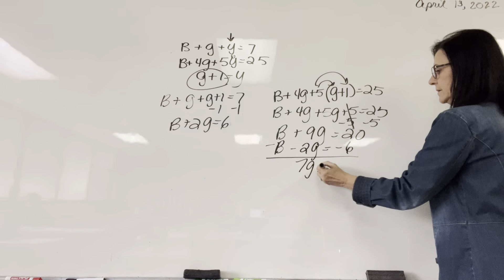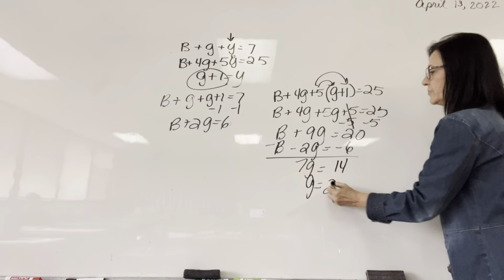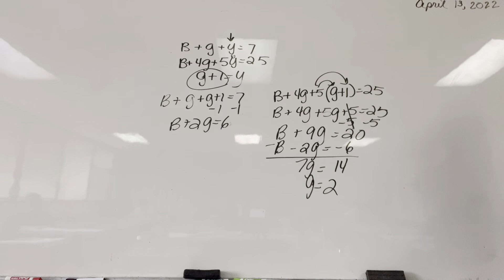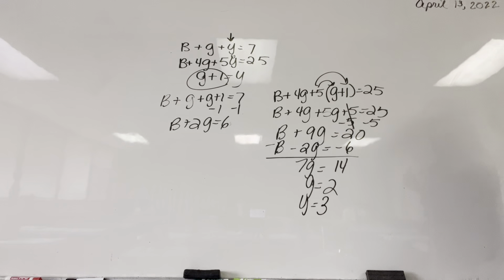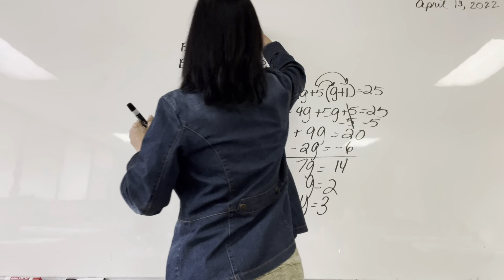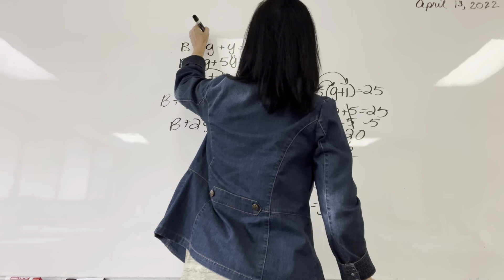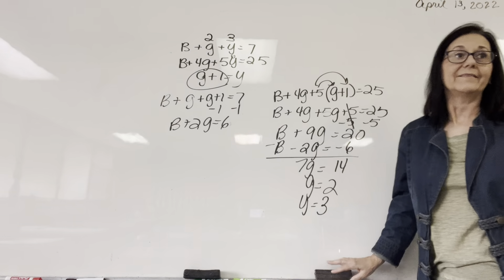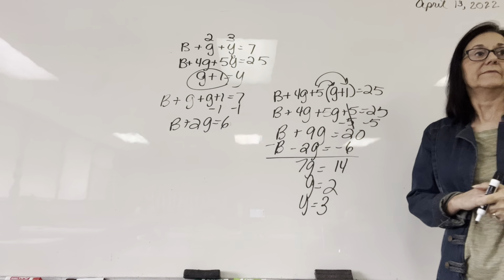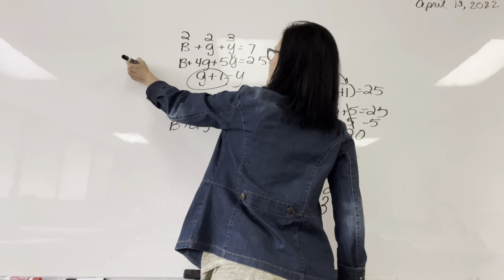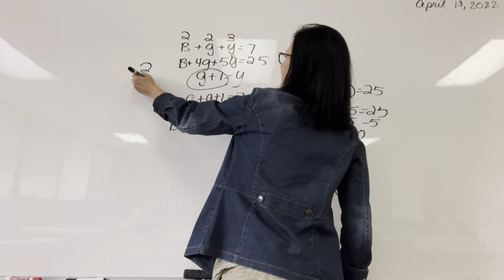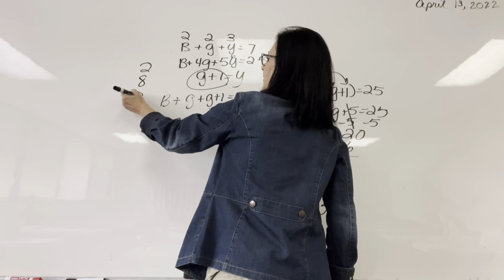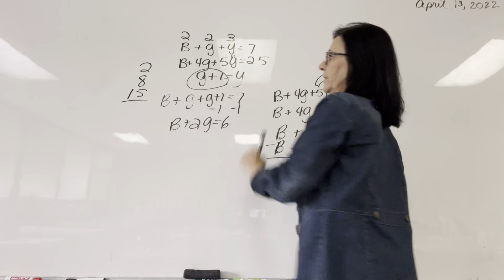We end up with 7G equals 14, so G equals 2 — we have two greens. If I have two greens, how many yellows? Three. And how many blues? Two. Let's verify: blues weigh 1 each — that's 2; greens weigh 4 each — that's 8; yellows weigh 5 each — that's 15; and 2 plus 8 plus 15 equals 25. Correct!